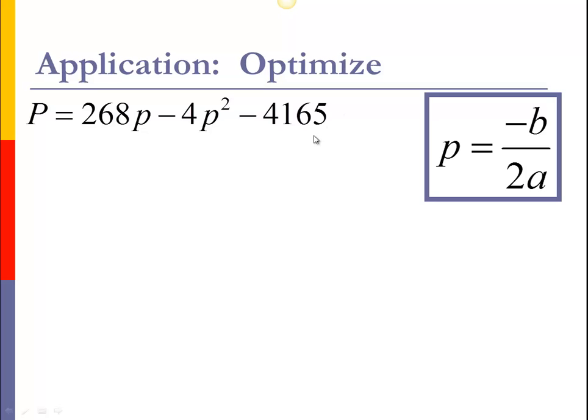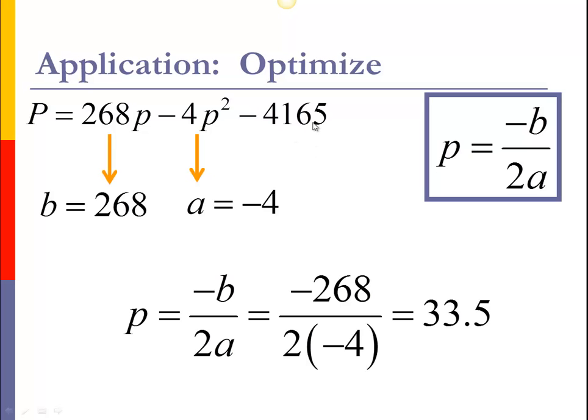Now to optimize this, remember the vertex formula: negative B over 2A. B is the coefficient of the P term, A is the coefficient of the power 2 term. We plug our A and B into our vertex formula and we get 33.5. So $33.50 is our price that will give us the largest profit.